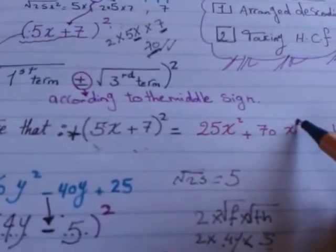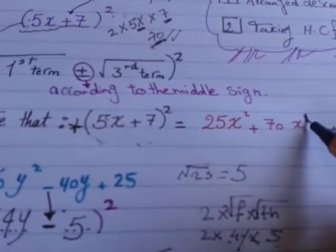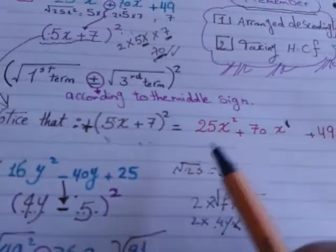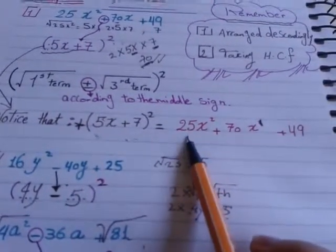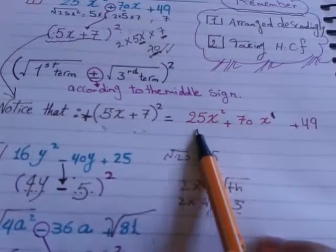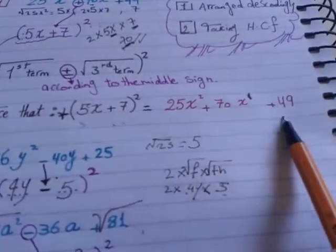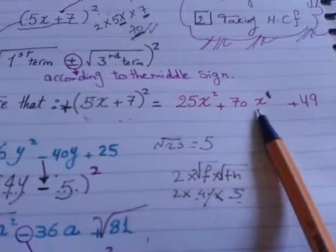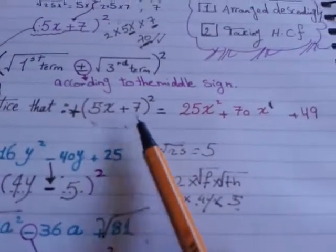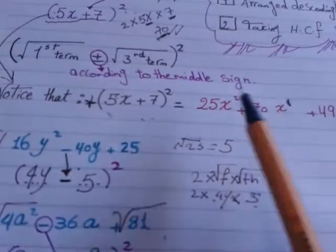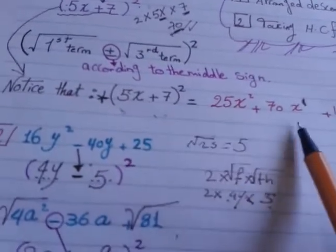Remember this. Here 5x, its power 2, is 25x². 7 to the power 2 is 49. What about the middle? 5 times 7 times 2: 5 times 7 is 35, 35 times 2 is 70x, because 5x times 7 is 35x.